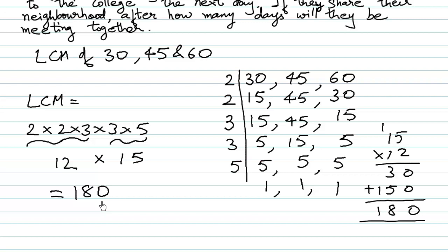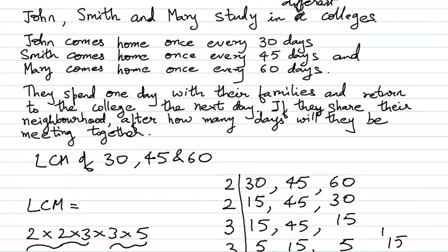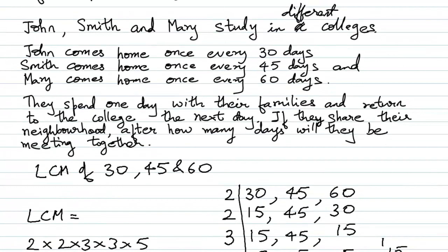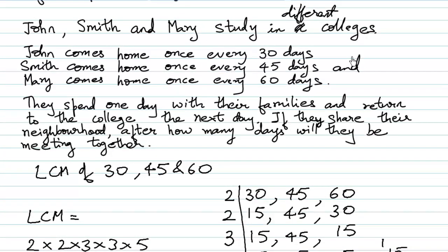So many times you may be wondering where did LCM come from. Let us modify this question. Let us say that John is not going to come after 30 days but after only 3 days, Smith is not going to come after 45 days but after 4 days, and Mary comes after 6 days. So the answer to this would be the LCM of 3, 4 and 6.